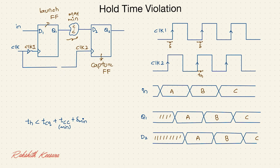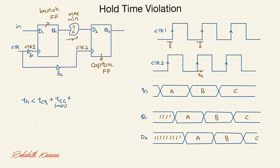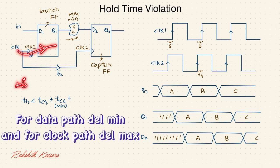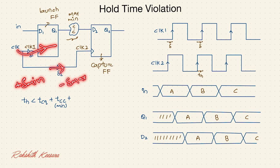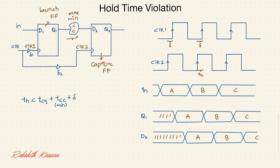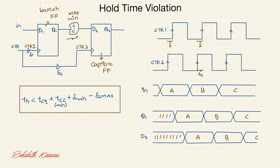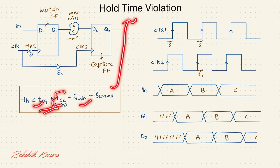Now what if delay is introduced in both clocks — let delta 1 be the skew on the data path (clock 1) and delta 2 be the skew on the clock path (clock 2), with both maximum and minimum values mentioned. For the data path we take plus delta 1 minimum, and for the clock path we take minus delta 2 maximum. So the final hold time equation is: T_hold must be less than clock-to-Q delay plus combinational circuit delay plus delta 1 minimum minus delta 2 maximum. Any circuit not following this equation is violating hold time. To fix violations, you can increase combinational circuit delay, increase delta 1, or decrease delta 2.